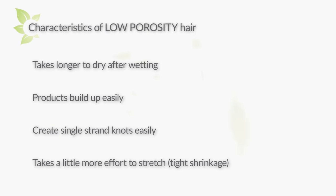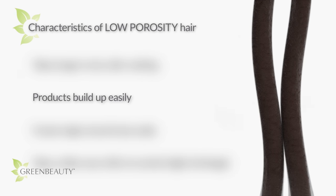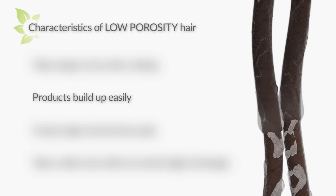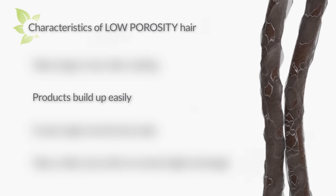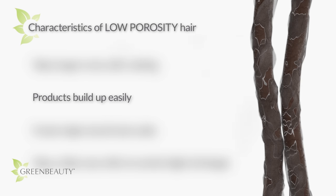Since we mentioned products, this is the best time to talk about product buildup, because it's a big issue with low porosity hair types. Product buildup occurs because your tight, flat cuticle layers make it difficult for products like creams, oils, and conditioners to penetrate easily, so they end up just sitting on the surface of your hair strands. As you add more and more product, the layers thicken and harden, making your hair feel less flexible. More importantly, that layer of product blocks the invisible transaction of moisture from the air.